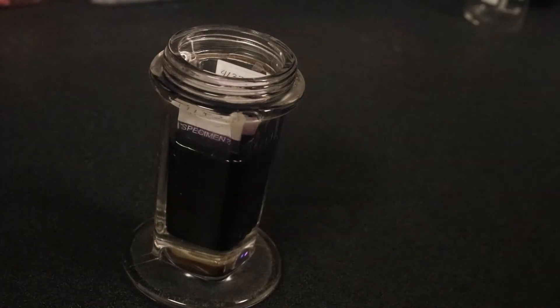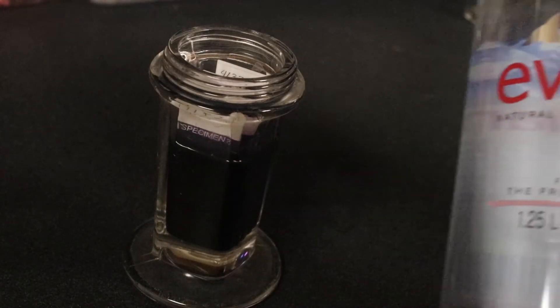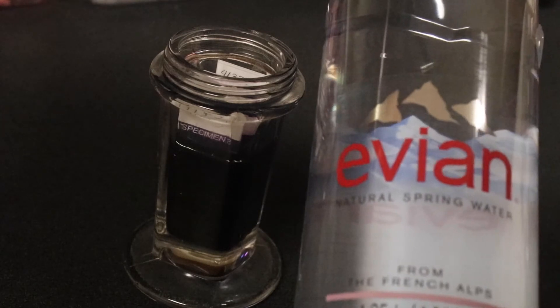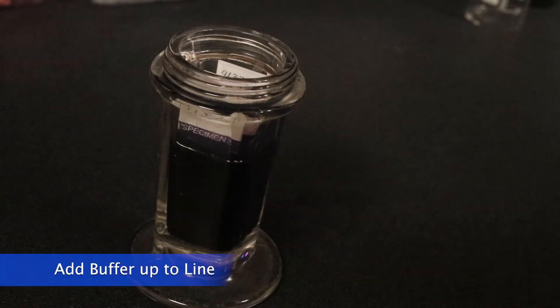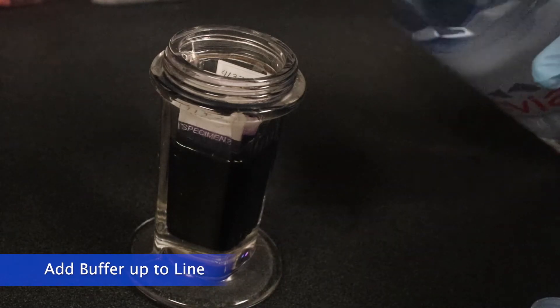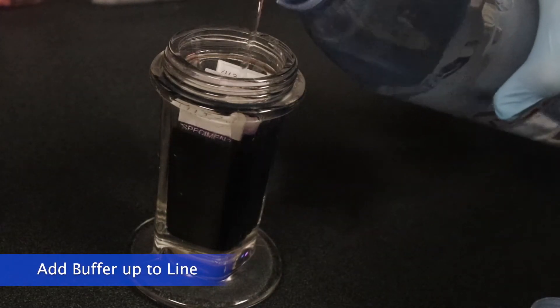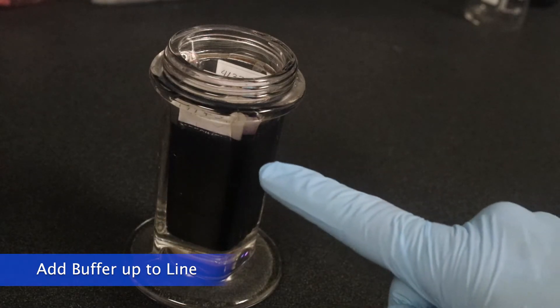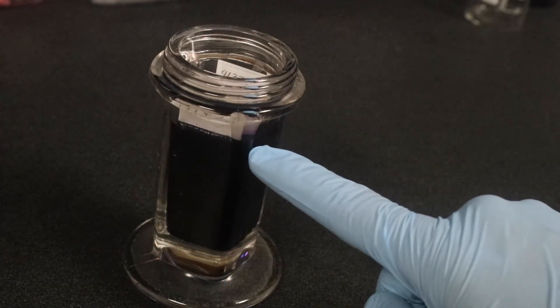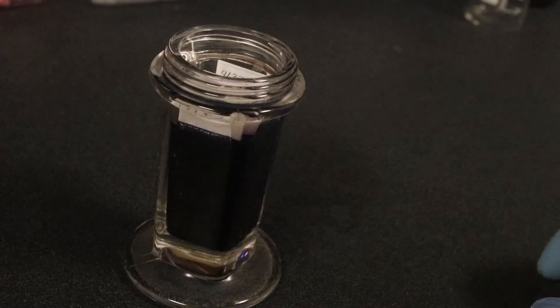Notice here that, like I said before, I undershot the amount of buffer that I wanted to put in, but now I'm going to add a little bit more so that the liquid level goes right up to the white part where you can write the numbers on, and that will stain the whole slide without staining the white area.